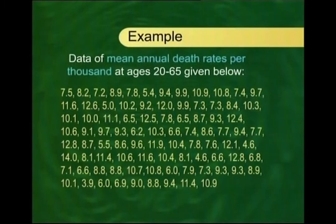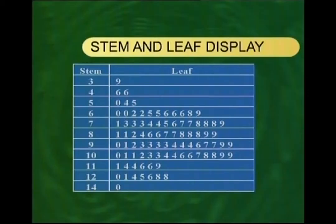Let us now consider another example with the mean annual death rates for a population for age groups 20 to 65. These death rates are per thousand, with figures such as 7.5, 8.2, 7.2, and so on. Using the decimal part as the leaf and the rest of the digits as the stem, we obtain an ordered stem and leaf display. I leave it to you to verify this and to study a few variations of the stem and leaf display, as we now proceed to the next concept: central tendency.